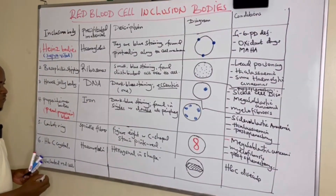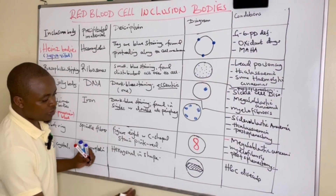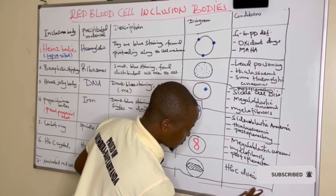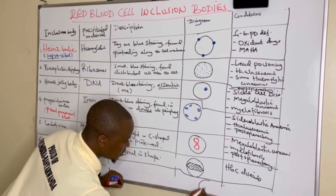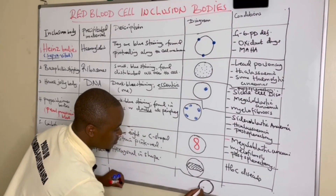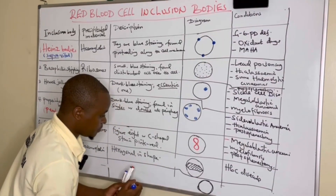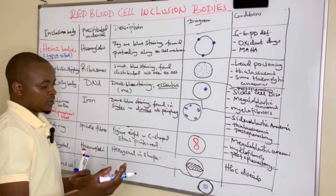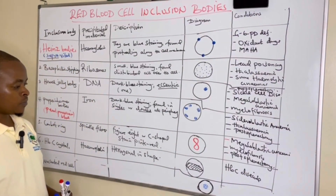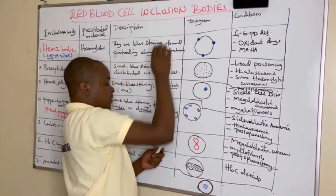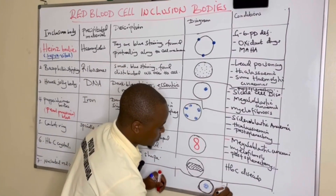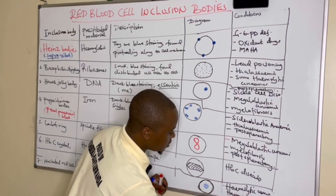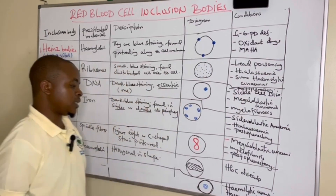Nucleated red cells indicate increased bone marrow activity. When drawing them, the nucleus can be in the center, or it may be pyknotic at the periphery. They are seen in hemolytic and hemorrhagic anemias. These nucleated cells possess a blue staining nucleus within them.